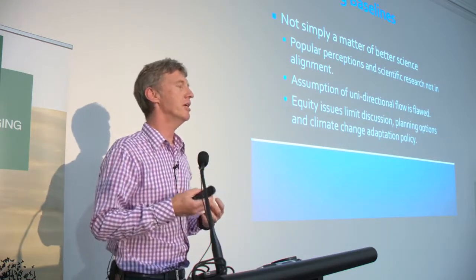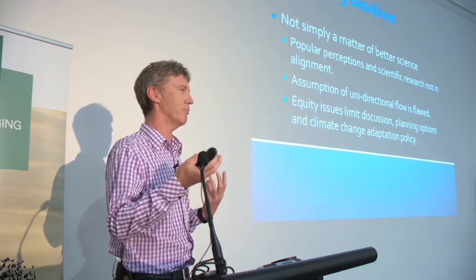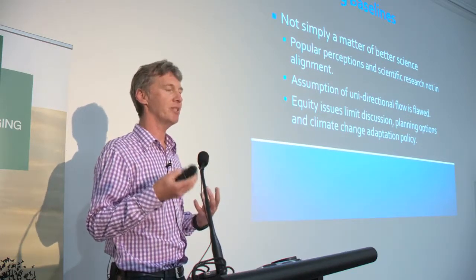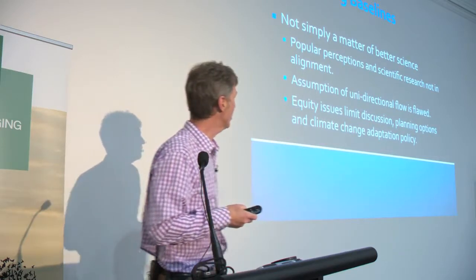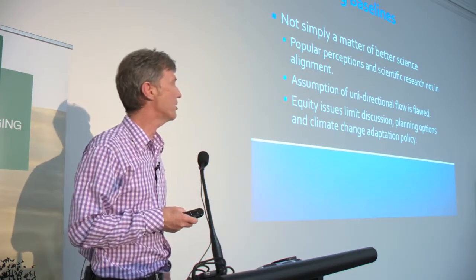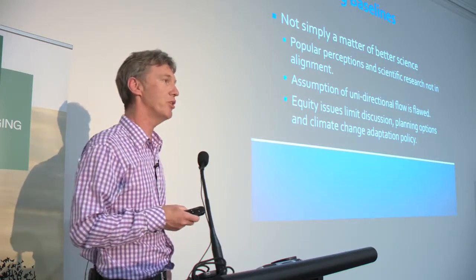The paper tries to bring this together. It's not to say the science is completely perfect — it can be developed further. But what's the point in developing science for its own sake if it's not resonating with anybody? There's a gap between popular perceptions and scientific research. They're not in alignment at the moment. There's also an assumption of a unidirectional flow in terms of the relationship between climate change, the coast and the land. And I think equity issues are tending to limit the discussion, limiting the planning options and climate change adaptation policy.